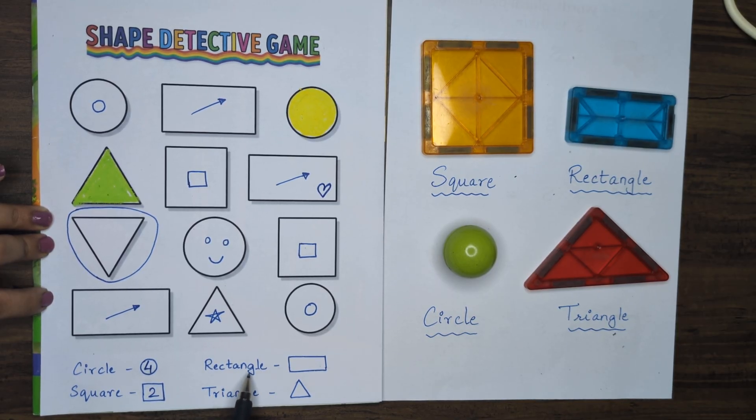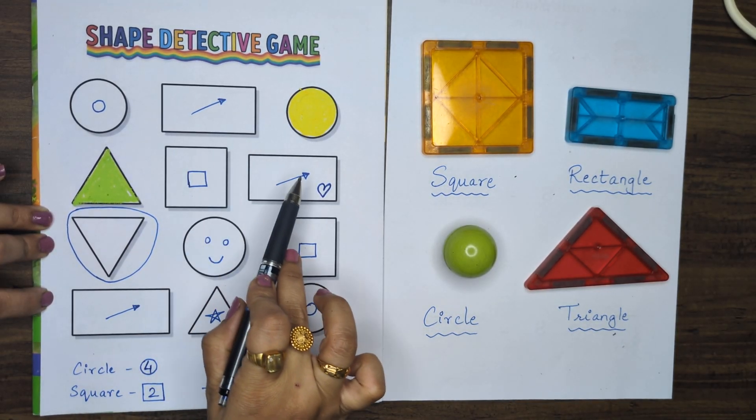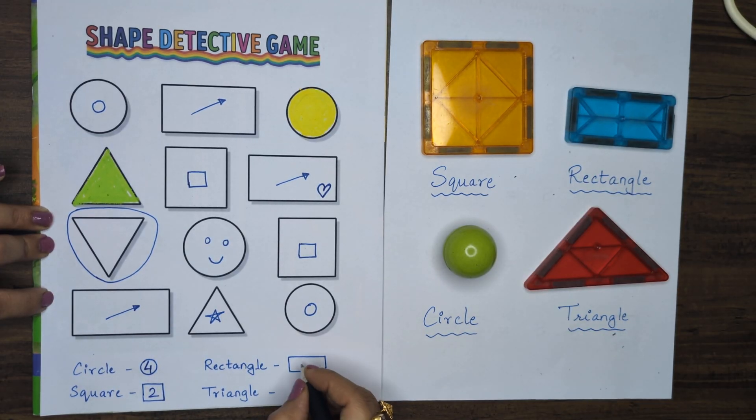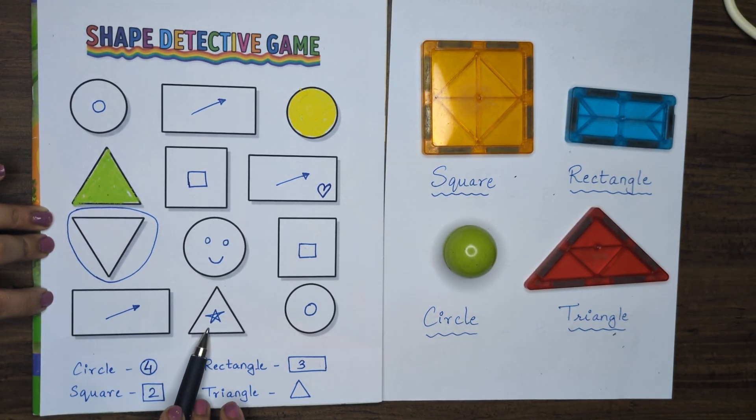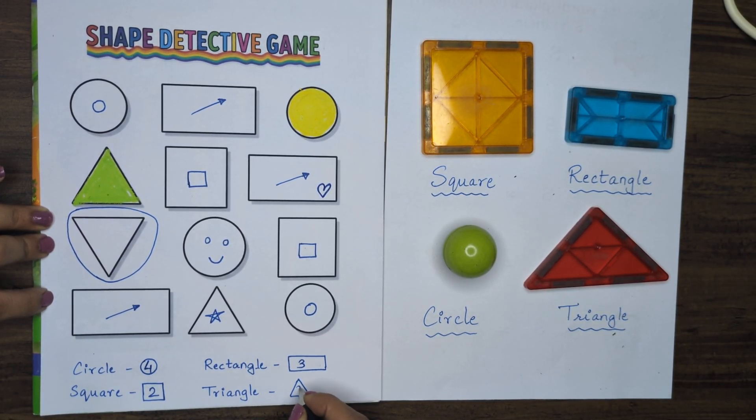1, 2, 3. Find out the number of triangles: 1, 2, 3. Excellent young learners, we all did so great.